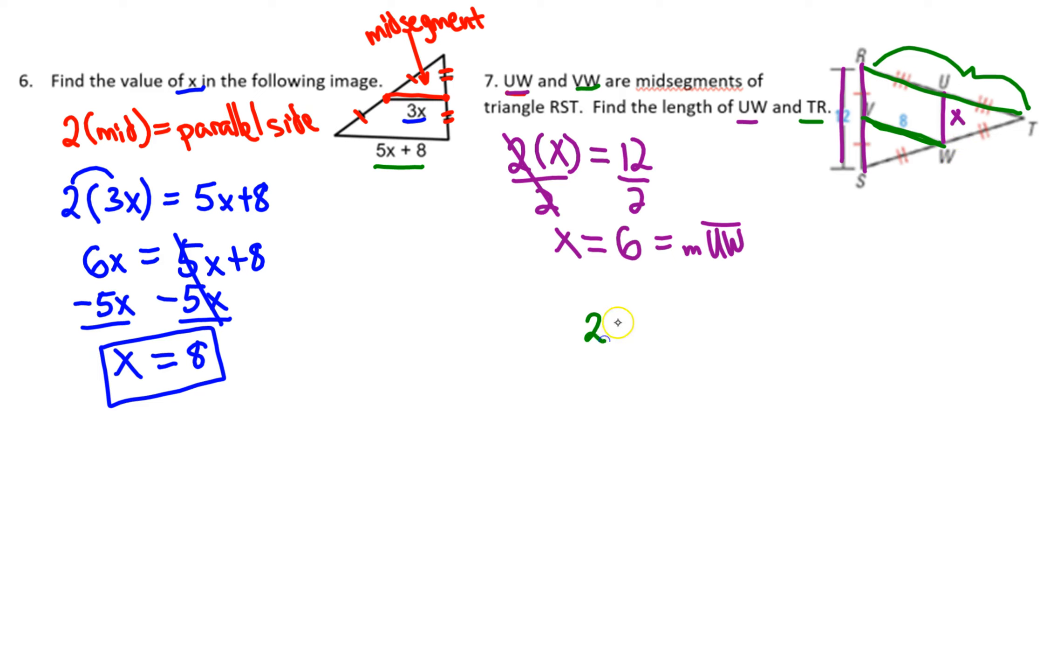Two times the mid-segment, which is 8, equals TR. We'll call TR variable y. So 2 times 8 equals 16, which equals y. Therefore, the measure of TR is 16.